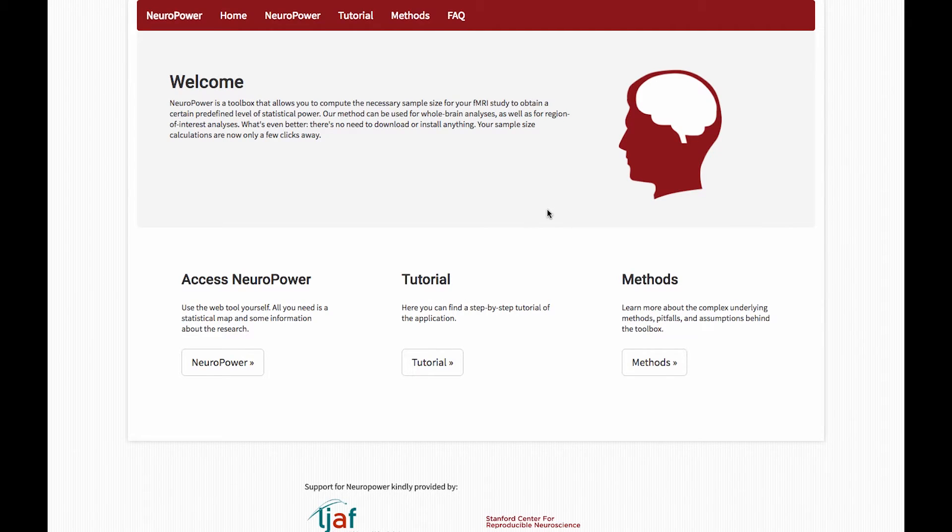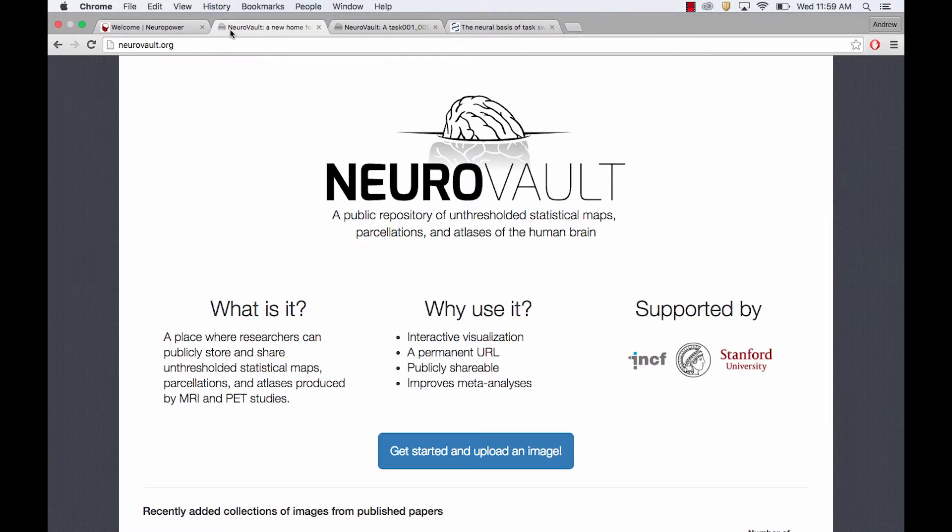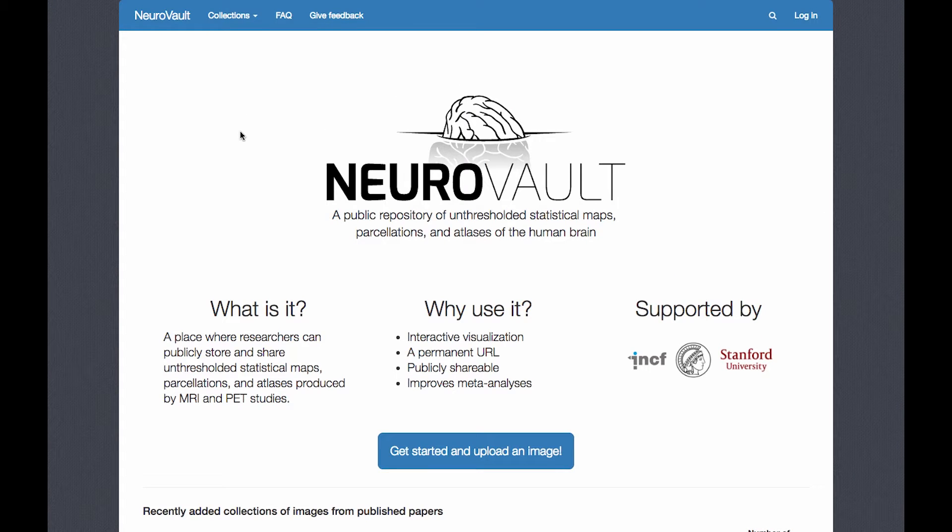To do our tutorial, we're going to be using a dataset from NeuroVault. NeuroVault has datasets and group-level maps from all kinds of studies. If you don't have pilot data of your own, you can use a similar study listed here to do power analysis.